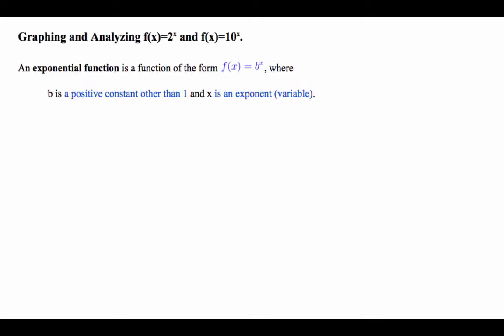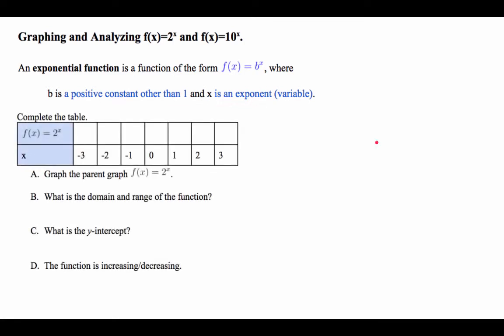We're going to start by graphing and analyzing f(x) equal to 2^x and f(x) equal to 10^x. But before we start that, what is an Exponential Function? It's in the form of f(x) equal to b^x, right? And b is a positive constant other than 1. It can't be 1. And it also should say it cannot be 0, but we'll address that later. And x is an exponent.